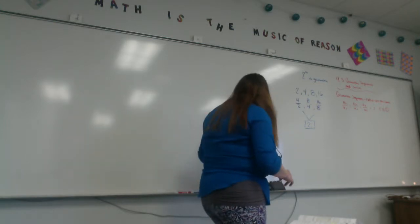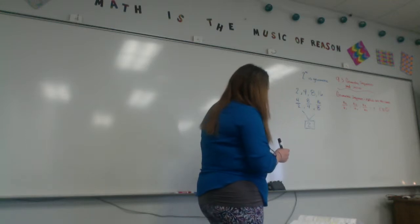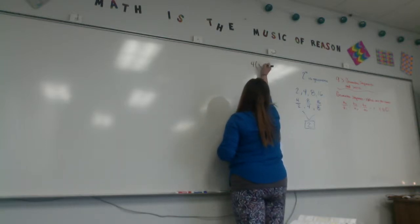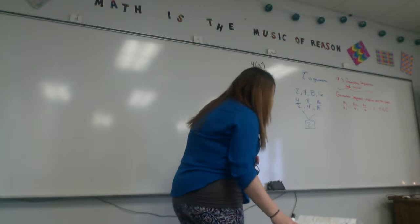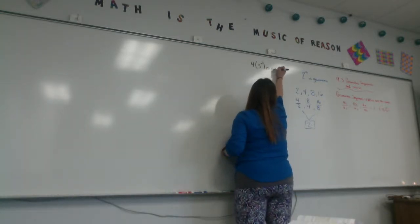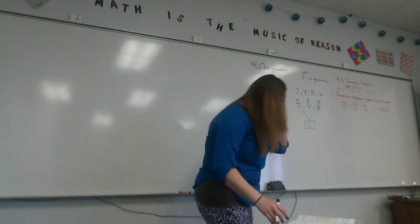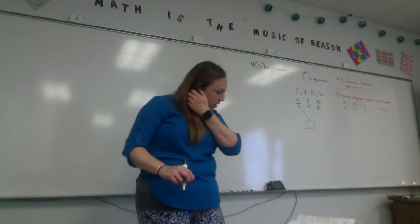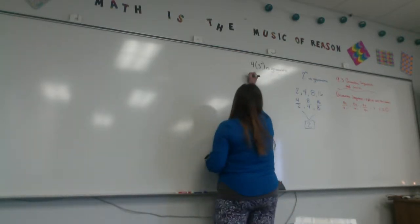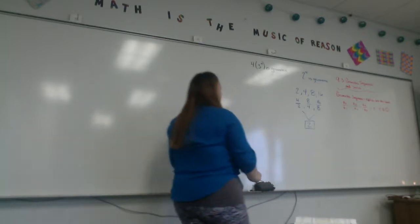What if I have this, the sequence whose nth term is 4, parentheses, 3 to the n. It says that it is geometric. For the sequence, the common ratio between consecutive terms is what if I have these numbers.